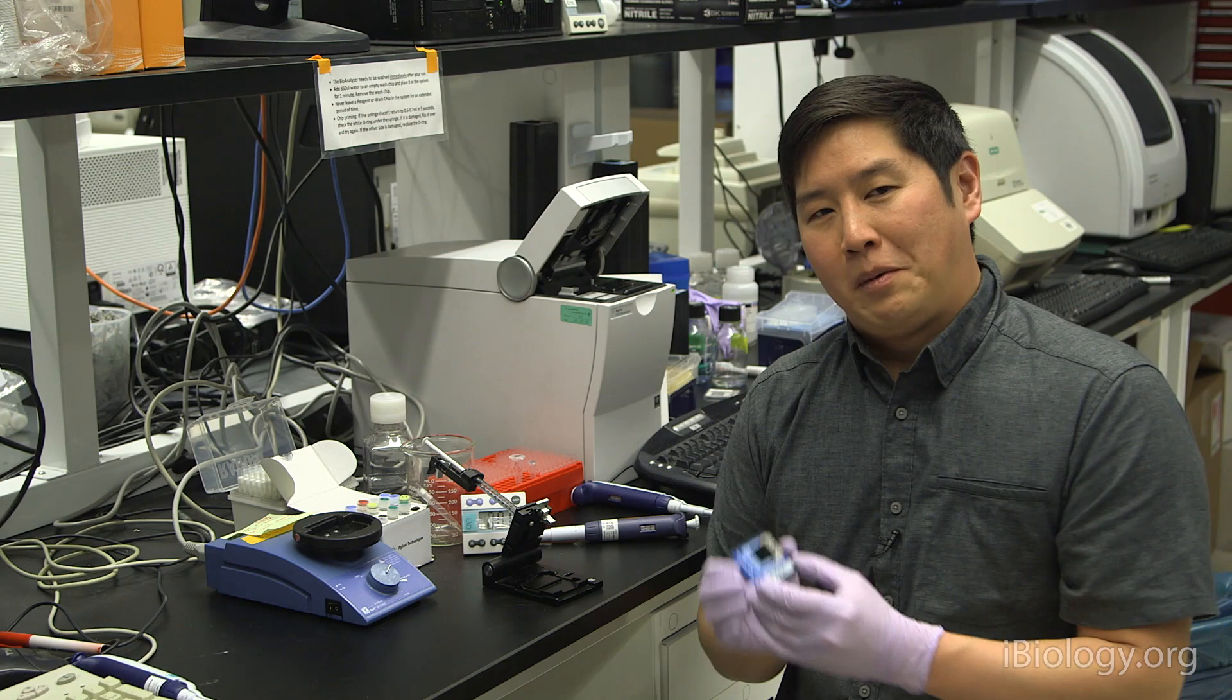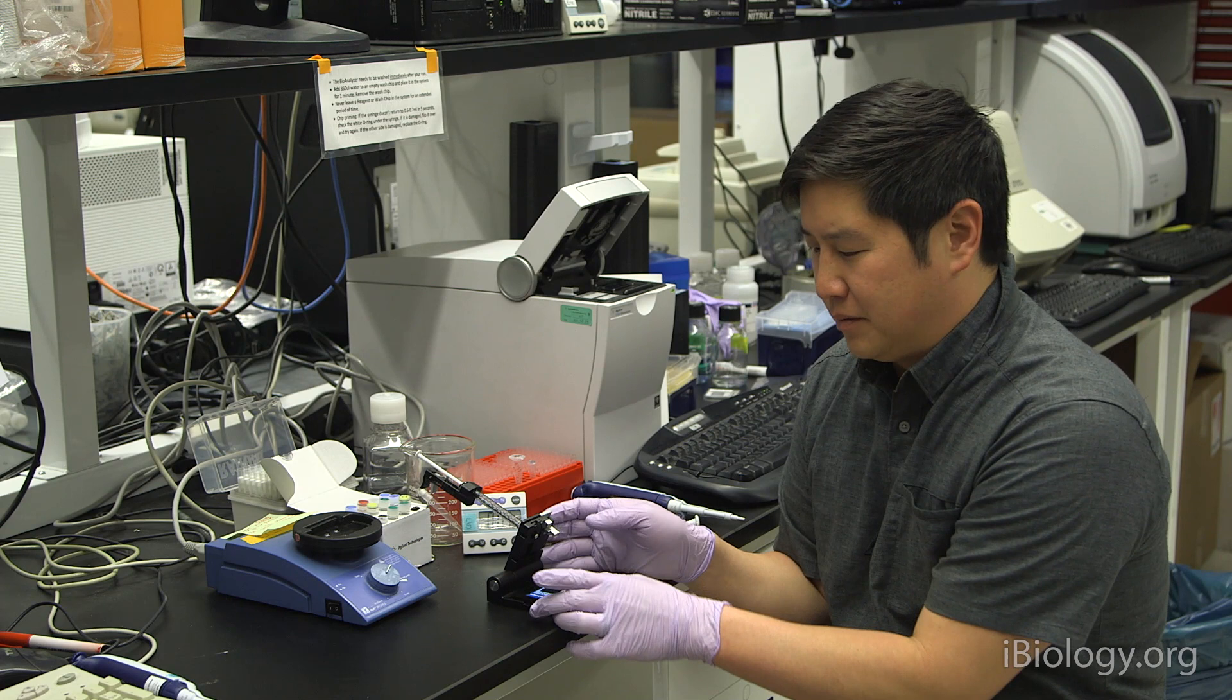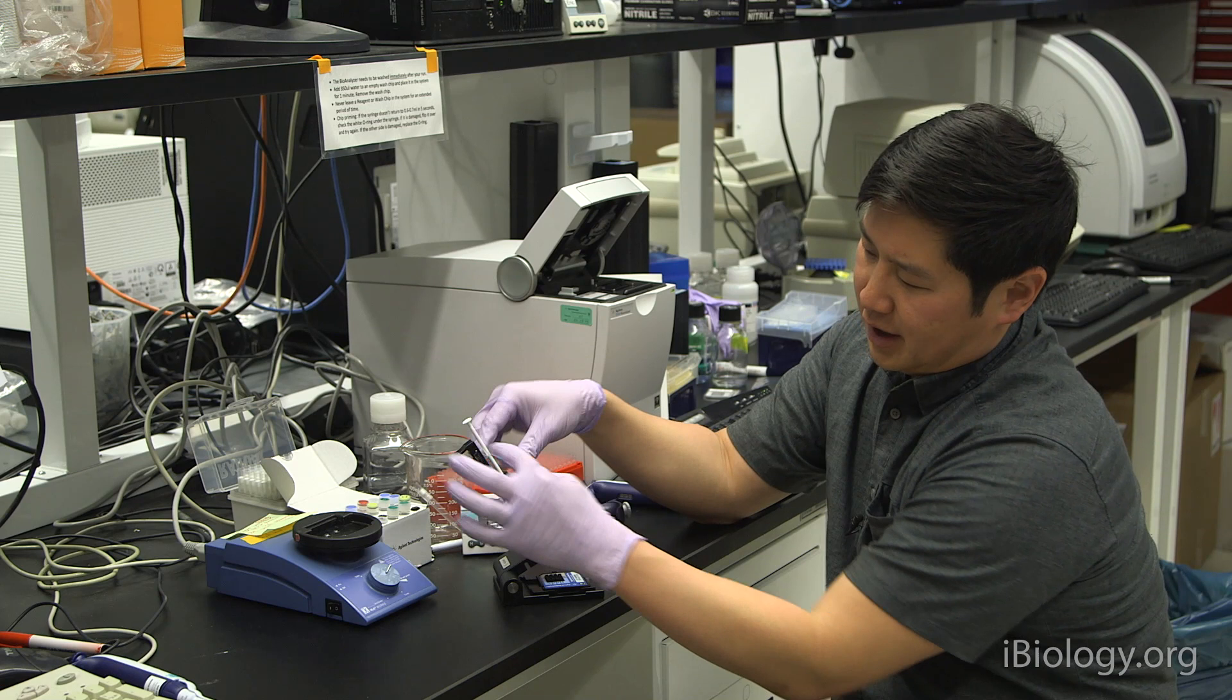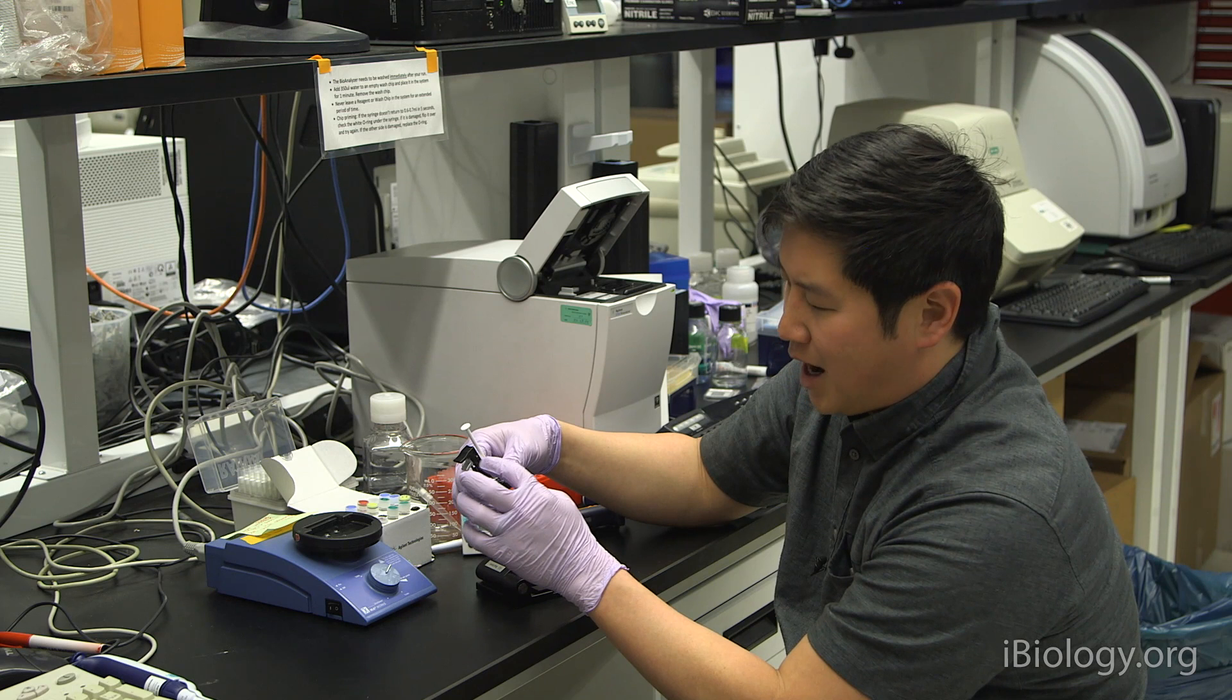Now, we'll prepare our chip. I've already opened this up from the plastic packaging, and we'll place this into the priming station. The chip sits down in here and doesn't really move. On the priming station, it's important to note that this is made of a plunger, and there is a holder to hold the plunger at different positions. Depending on which chip and assay you use, you'll need to make sure that you set the plunger to the proper setting.